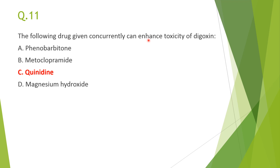Question 11: the drug given concurrently that can enhance the toxicity of digoxin is quinidine, because it decreases renal and biliary clearance of digoxin, thereby doubling its level and causing toxicity.